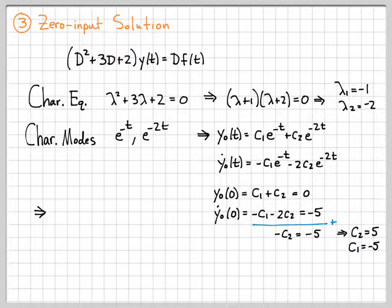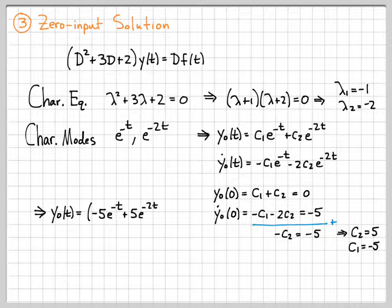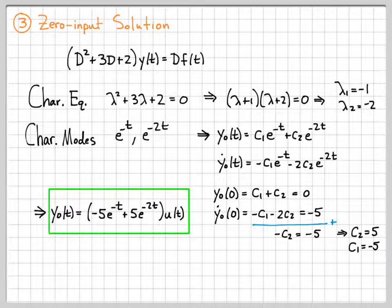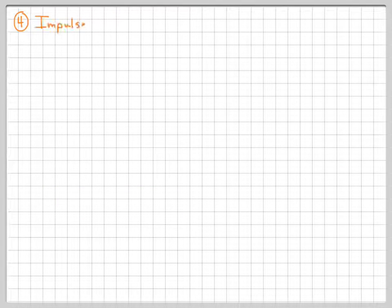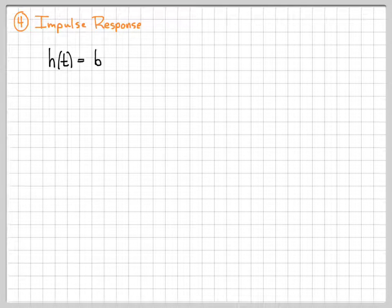So I've now solved for the zero input solution to the system. That's one part that we need. Next, let's figure out what the impulse response of the system is. If I want to know the zero state response, I need to do convolution with my impulse response. I don't know what the impulse response is right now, so let's go ahead and solve for the impulse response.